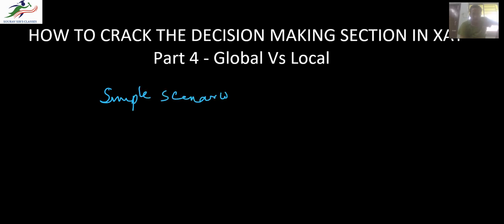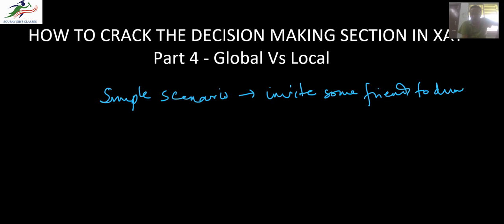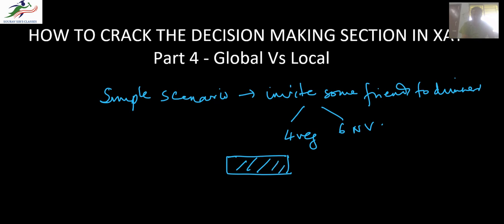Hello and welcome to Sorosers Classes. Today we'll discuss the global versus local approach to any decision-making. Even for a simple scenario, like when you want to invite some friends to dinner and let's say there are ten of them — four are vegetarian and six are non-vegetarian — and you have to decide on the menu, the obvious answer is you will keep an assortment of food items which can be consumed by both.